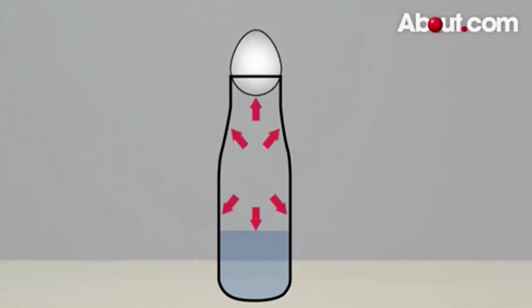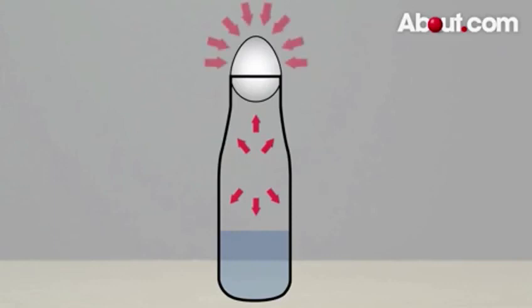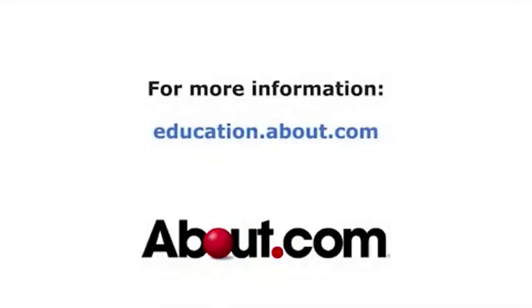As the air cools, the egg settles down and seals the mouth of the bottle. Now there's less air in the bottle than when you started, so it exerts less pressure. When the temperature inside and outside the bottle is the same, there's enough positive pressure outside the bottle to push the egg inside. Thanks for watching.